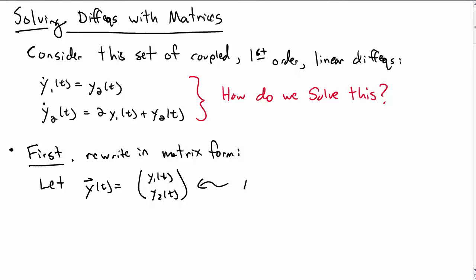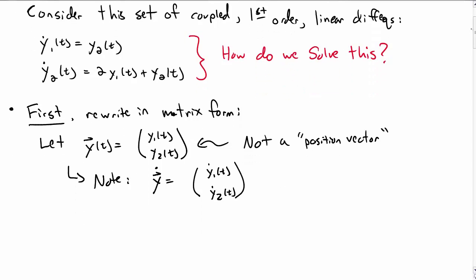Now note that this really isn't a position vector in any sense. It's just a regular vector that we've written this way. Also note that y vector dot is y1 dot, y2 dot. The time derivative just goes right through.